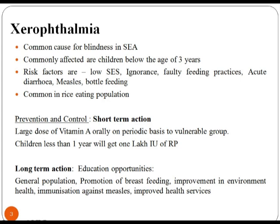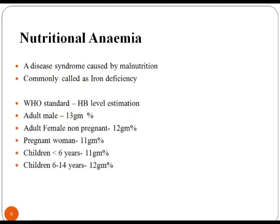Prevention and control: Short-term actions include large doses of vitamin A orally on a periodic basis to vulnerable groups. Children less than 1 year will get 1 lakh international units. Long-term actions include education programs such as promotion of breastfeeding, improvement in environmental health, immunization against measles, and improved health services.